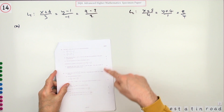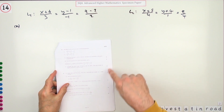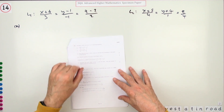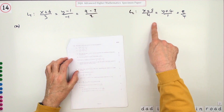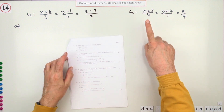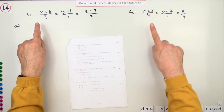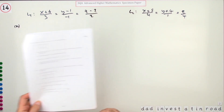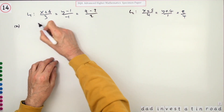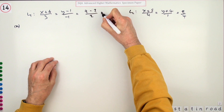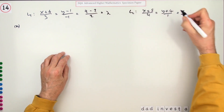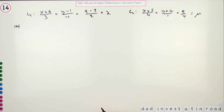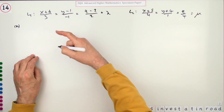Number 14 for 12 marks from this specimen paper. You've got the equation of two lines. For part a, five marks: show they intersect and find the point of intersection. First thing would be to give them parameters to work with — I'll use lambda and mu — so I'll need to rewrite these lines in parametric form.